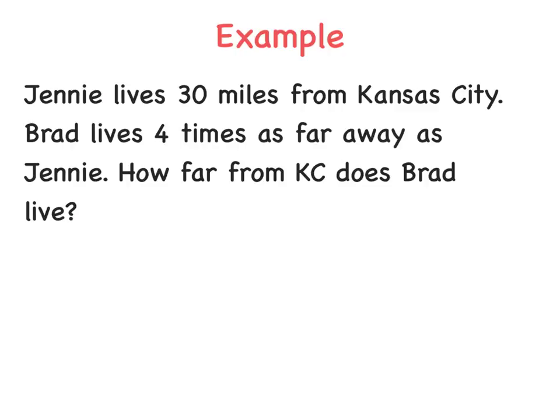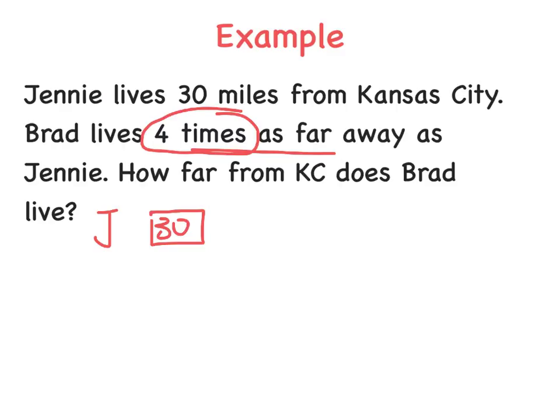Let's look at this example and see which type of picture it is — a groups picture or a comparison picture. It says Jenny lives 30 miles from Kansas City. Brad lives four times as far away as Jenny. How far from KC does Brad live? Since I see 'four times as far,' I know it's a comparison picture. I'm going to draw the picture first, then we'll talk about writing the equation and solving. Jenny is 30 miles away, so I'll draw a box with 30 in it for Jenny. Notice how I label it with a J. Since we're having two parts to this picture, they need to be labeled.